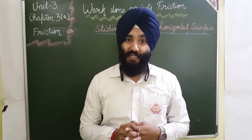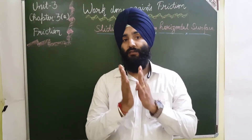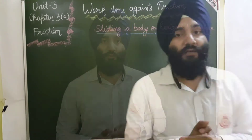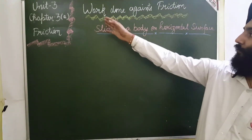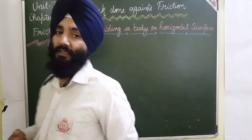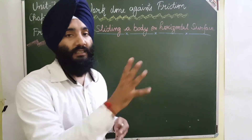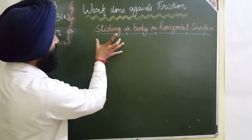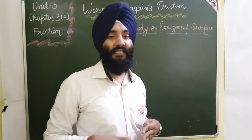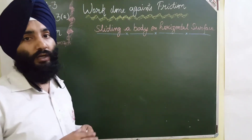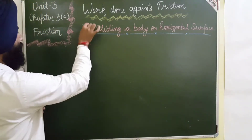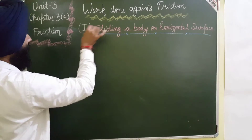Hello students. In the previous lecture we discussed about friction, angle of friction. Today what we have to do is find the work done against the frictional force — how much work we have to do for the body to start moving. First, the body will slide on a horizontal surface — this is case number 1. Second case: when the body is sliding up or down on an inclined plane.